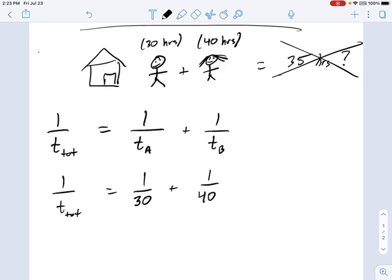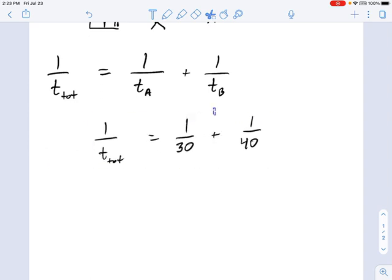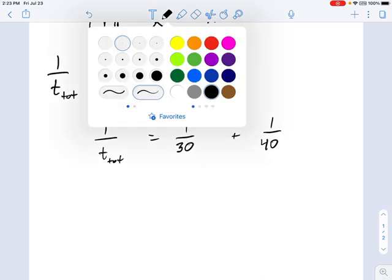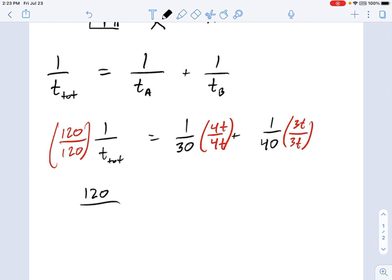And to do this, we have to use common denominators. Remember how these work? Take a look at this equation. What are the various pieces of this equation missing? I'm going to write common denominators. This one looks like it's missing a 4t. This one over here is missing a 3t. And this one over here is just missing a factor of 120. We get 120 over 120t total equals 4t over 120t total, and over here we have 3t plus, again, 120t total.